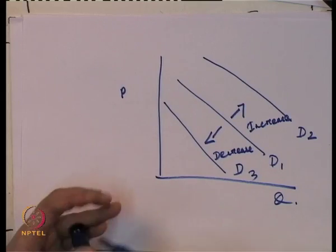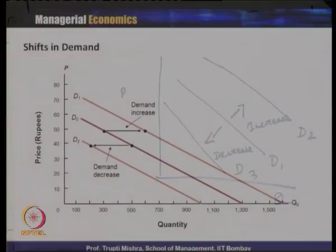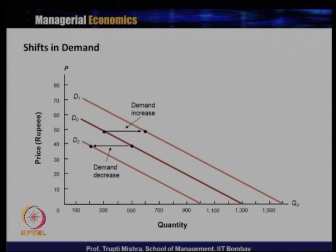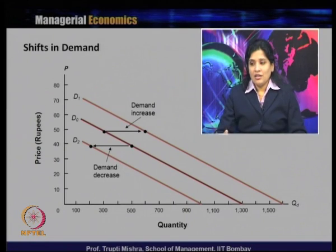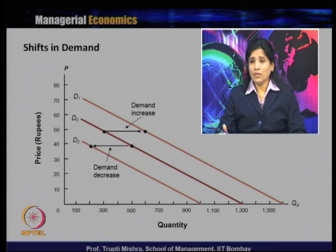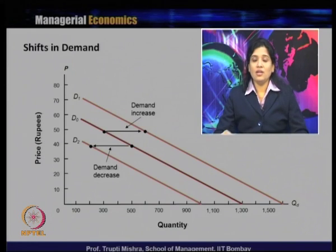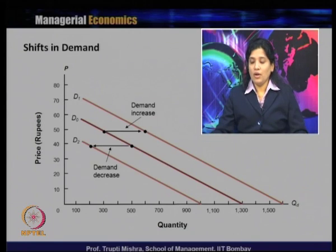We will take a specific example of in which case there is a change due to a change in price, and in which case the change in demand is because of a non-price determinant. Initially the demand curve is D0. Whenever there is a decrease in demand it shifts to the left and becomes D2. Whenever there is an increase in demand the demand curve shifts to the right and that is D1.